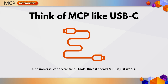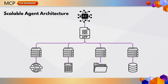Think of MCP as the USB-C of AI — a universal connector. Just like USB-C helped unify device charging, MCP unifies how models access tools and data. Once something speaks MCP, your agent can use it without needing custom instructions. This also means you can scale: one model, many servers, each with different capabilities. You can add a new server and the agent automatically knows what tools are available — no extra wiring needed.